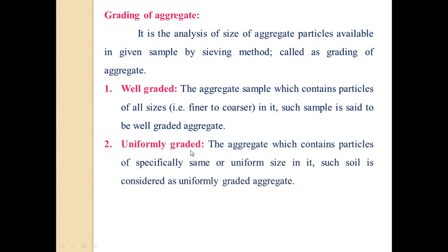Uniformly graded aggregate, also called poorly graded aggregate, is aggregate which contains particles of essentially the same or uniform size. For example, if a 500 kg sample contains aggregate of only the same size — say all 20 mm or all 10 mm — it is called a uniformly graded aggregate.